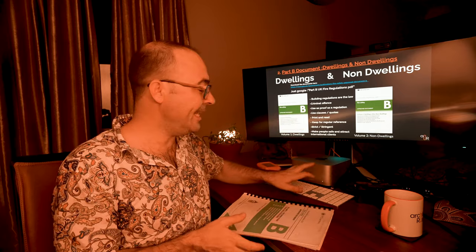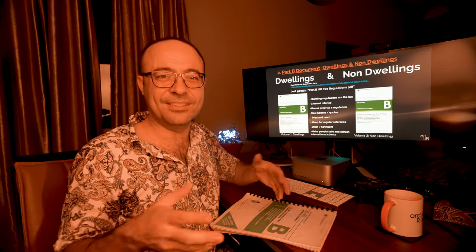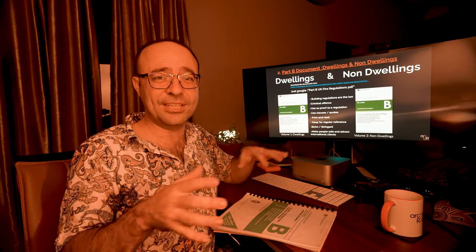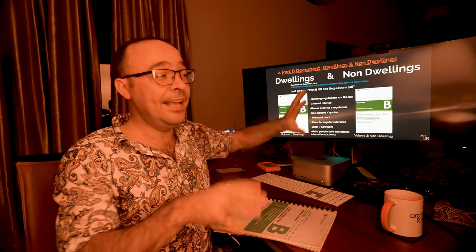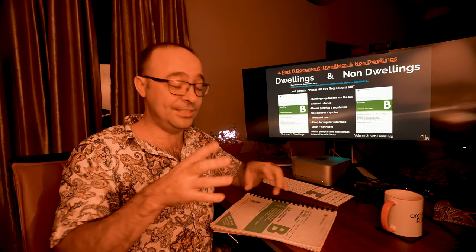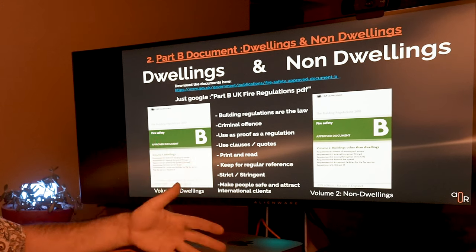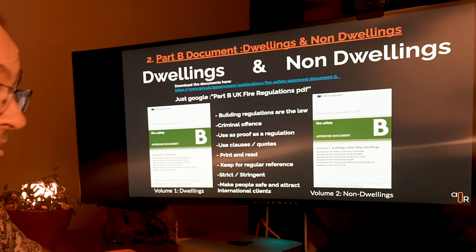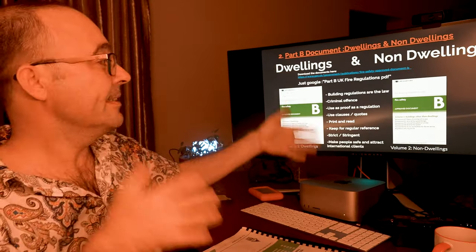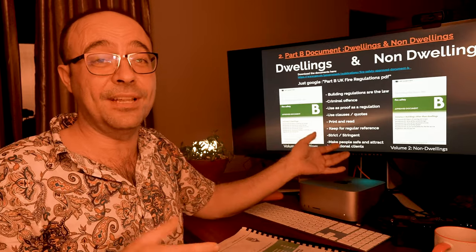So this document here that I'm going to go through, you can download in the description. There's a shop where you can buy it — I think it's $10 or something. It's like a 70-page document with all the regulations, all the notes, this presentation. You can click the links and download this document. It has clauses, quotes, tables and everything. I recommend you print this out and use it like a Bible. This is the law in the UK — you have to abide by it; it's a criminal offence if you don't.